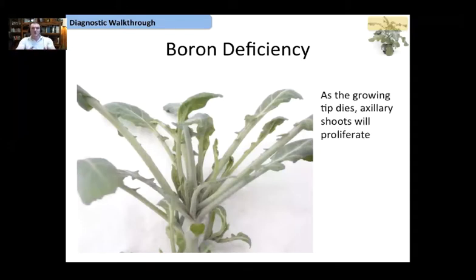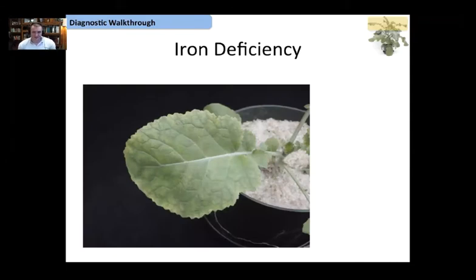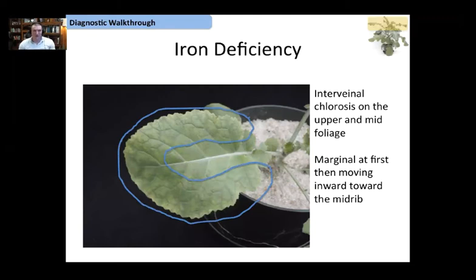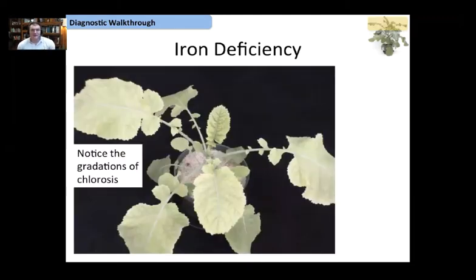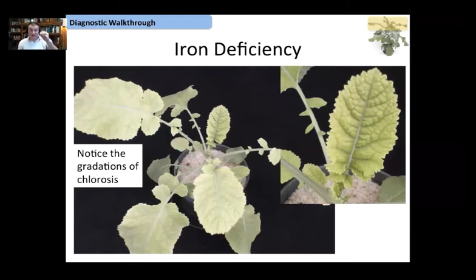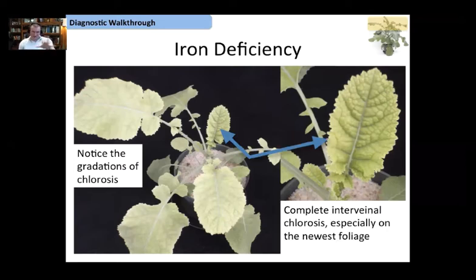Like calcium, boron deficiency is going to cause the death of the growing tip, so you'll have increased proliferation of axillary shoots. As the growing tip dies, all of those axillary shoots continue to grow. Moving on to iron deficiency — iron deficiency presents as marginal interveinal chlorosis, starting on the edge of the leaf and moving inward. You can see three regions: the lower leaves are green and healthy, the mid portion has pale coloration, and the new expanding top leaf shows severe interveinal chlorosis.